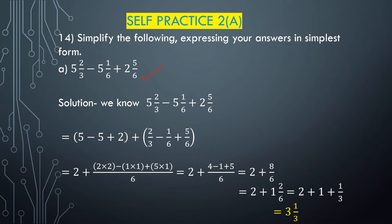First we have to separate the whole number part and fractional part. In 5²/3, the whole number part is 5. In 5¹/6, the whole number part is 5, and in 2⁵/6 the whole number part is 2. So the whole number calculation is 5 minus 5 plus 2, which equals 2.